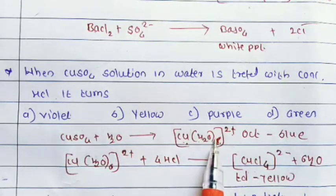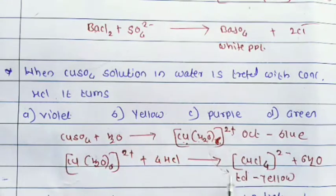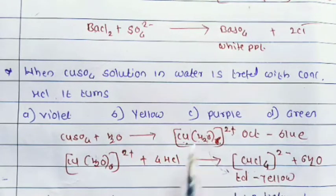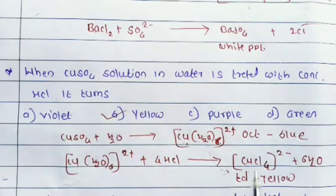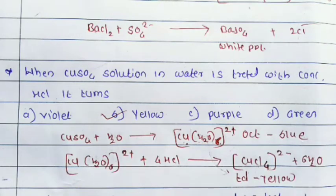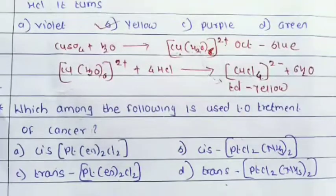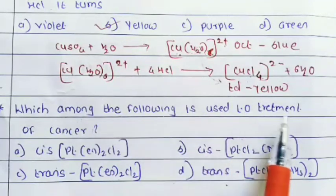So the blue-colored octahedral solution is converted into a yellowish-colored tetrahedral solution when treated with concentrated HCl, forming yellow [CuCl₄]²⁻.